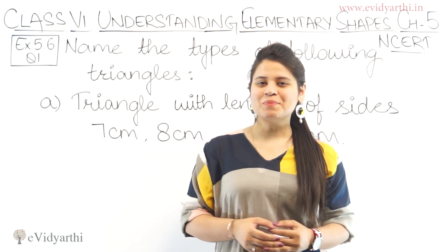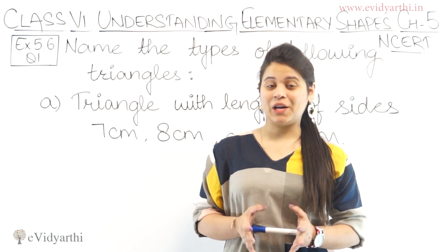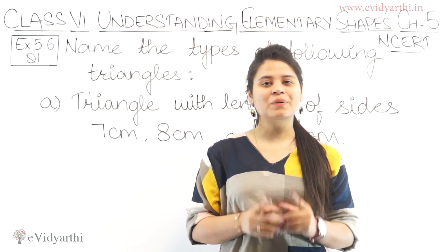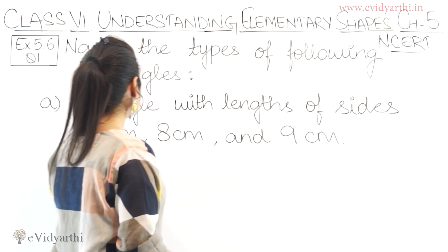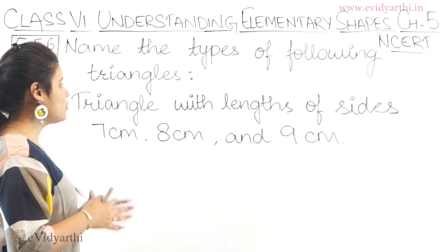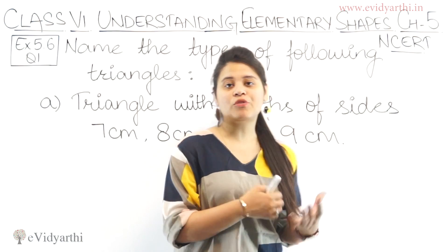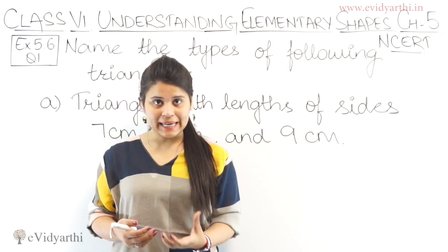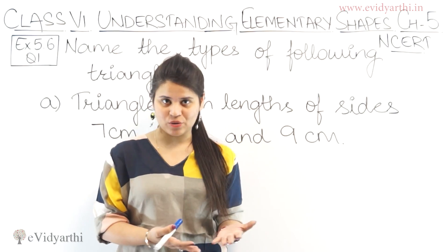Hello friends, this is Mansi from Emityati George and now we are starting with exercise 5.6. This is question number 1. In this question we have to name the types of following triangles. You have a statement given in which you are told about triangles, and you have to judge which type of triangle it is.